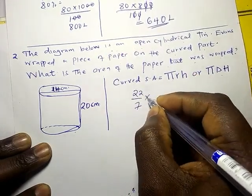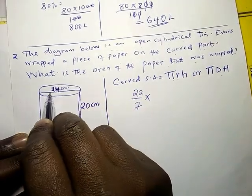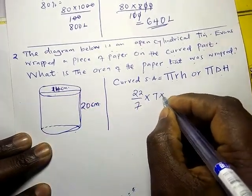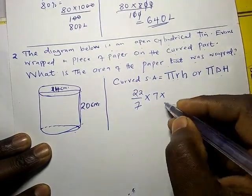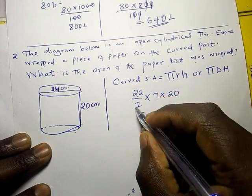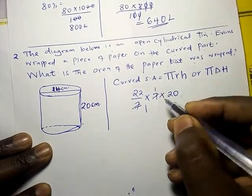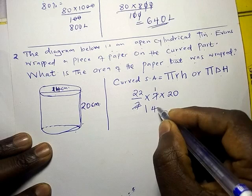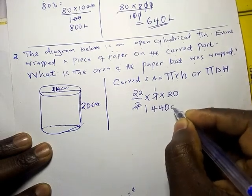Let us apply it. Pi is 22 over 7. The radius is 7 because the diameter is 14. The height h is 20. So we have 22 over 7 times 7 times 20. The 7s cancel, giving us 22 times 20, which is 440 centimeters squared.